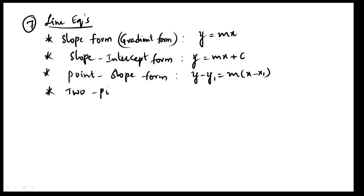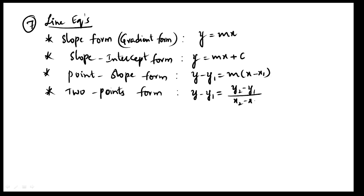Next is two-point form. Given two points x1, y1 and x2, y2, the formula is: y minus y1 equals (y2 minus y1 divided by x2 minus x1) into (x minus x1). This is the two-point form and the final form.